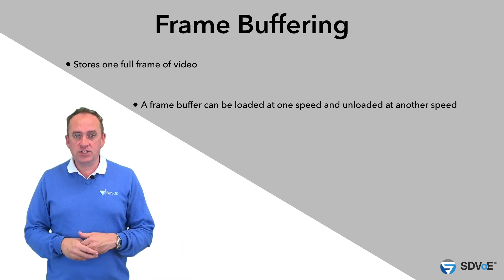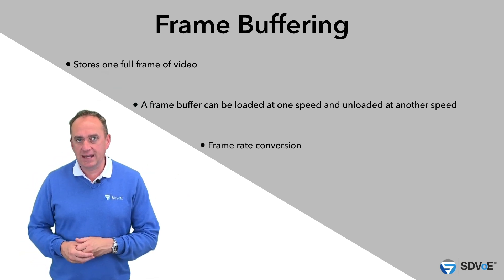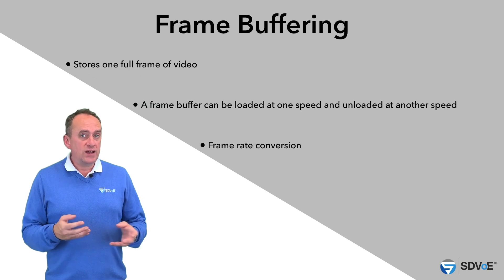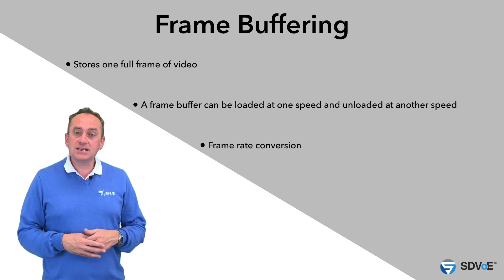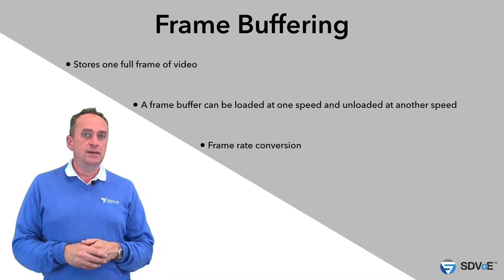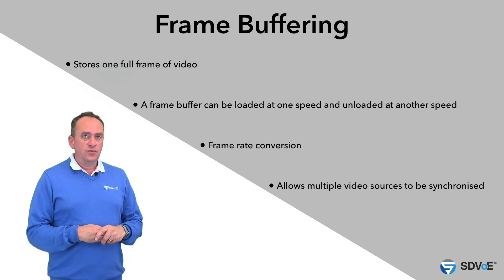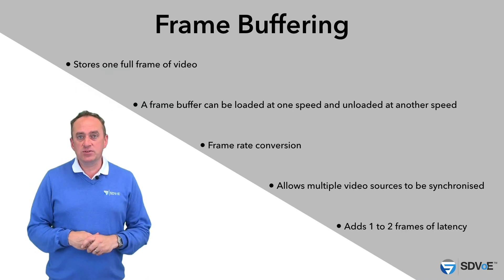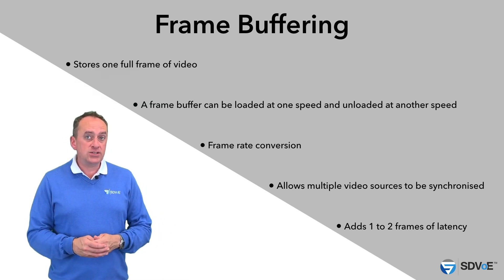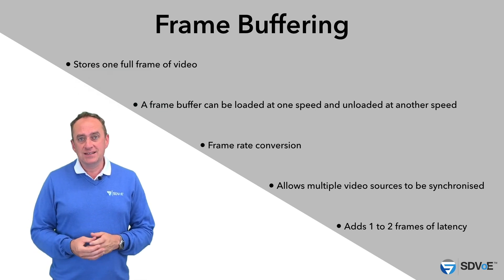Frame buffering has a few advantages. It enables frame rate conversion, giving you fully flexible scaling. This means that any resolution which goes into the transmitter will be scaled to whatever resolution the display is capable of. And since the display therefore never needs to adjust to a new signal timing, fast switching is amazing. There is a very small trade-off: frame buffering adds around 1–2 frames of latency depending on the difference between the input and the output clocks.